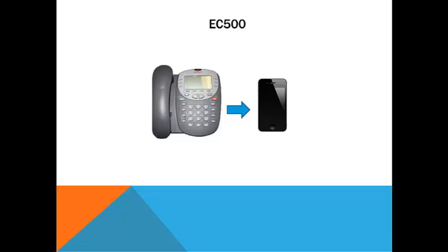EC500, Extension of Cellular, is a feature that links your office phone to a designated cell phone. When the EC500 feature is enabled and a call rings to your extension, it will ring your cell phone simultaneously until the call is answered or goes to your Kimbell voicemail.